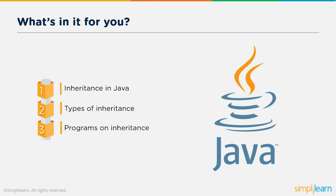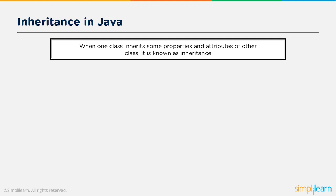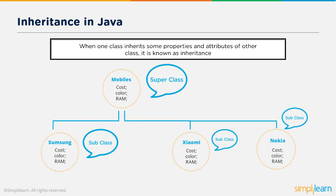Now let's see what is inheritance. When one class inherits some properties and attributes of another class, it is known as inheritance. In this example, Mobiles is a superclass that has variables like cost, color, and RAM. The classes that inherit the variables and methods of Mobiles are Samsung, Xiaomi, and Nokia. These classes are known as subclasses.